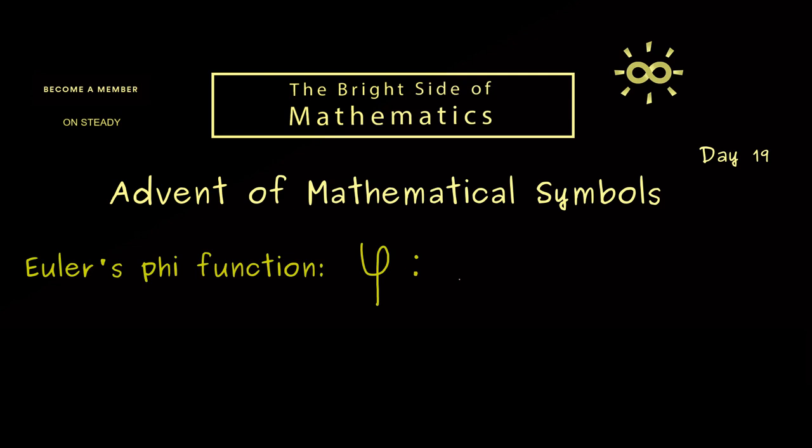Therefore, the domain of the function is given by the positive integers, so we have the natural numbers n starting with 1. And also the codomain is given by the natural numbers.